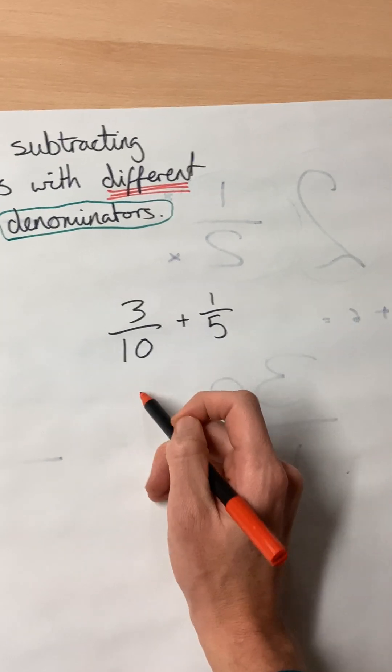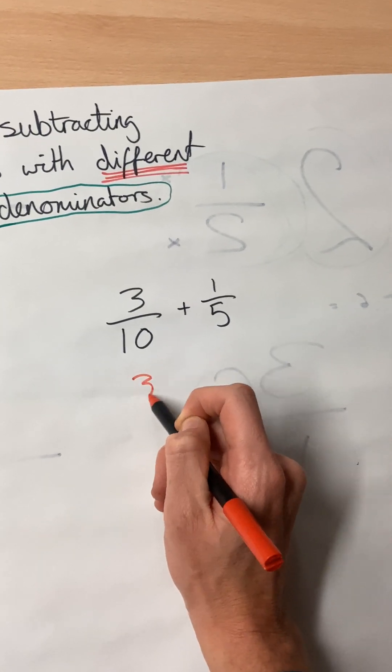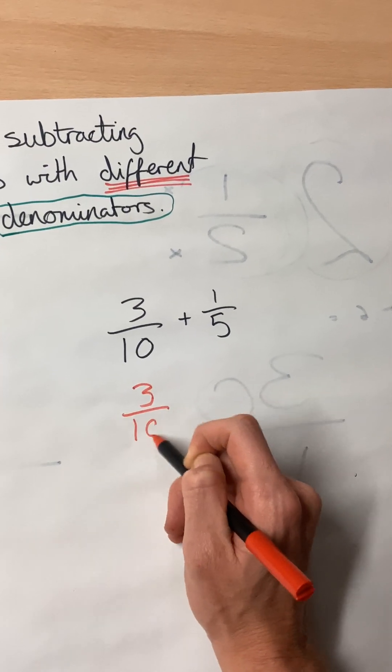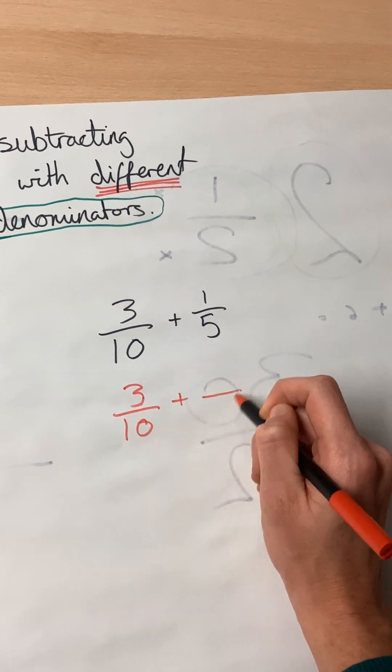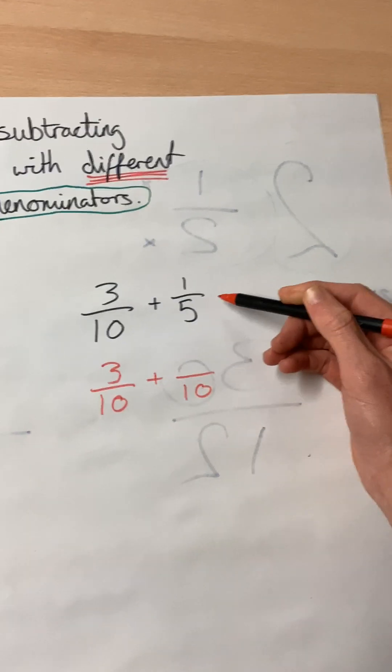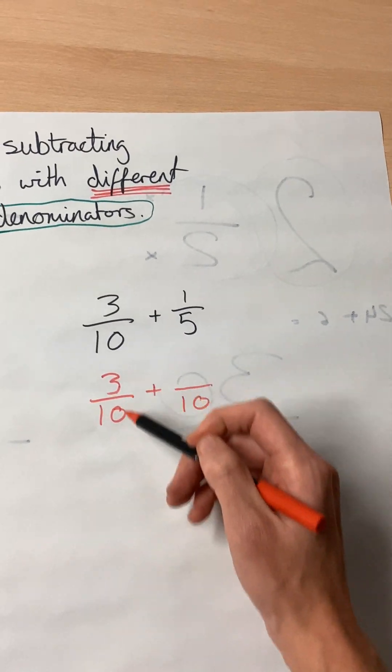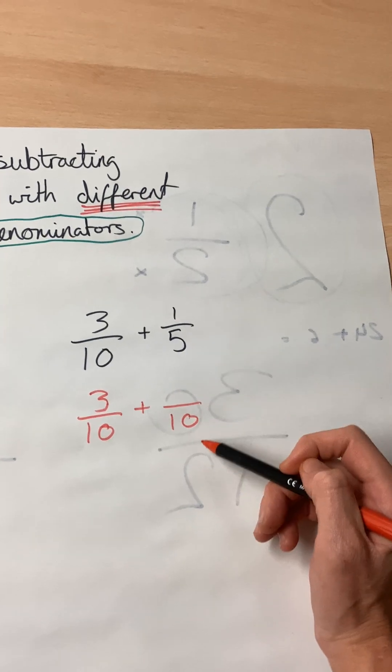So we want the ten on the bottom. We want the denominator to be ten. So we're going to rewrite the question. It's always easier to rewrite the question because we know we have to rewrite part of it.